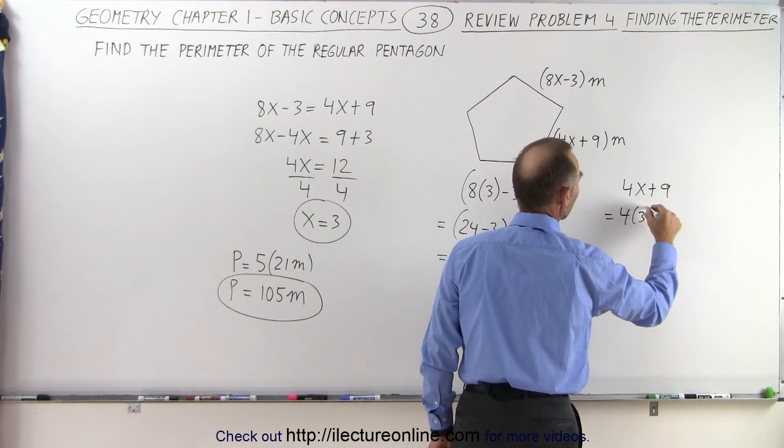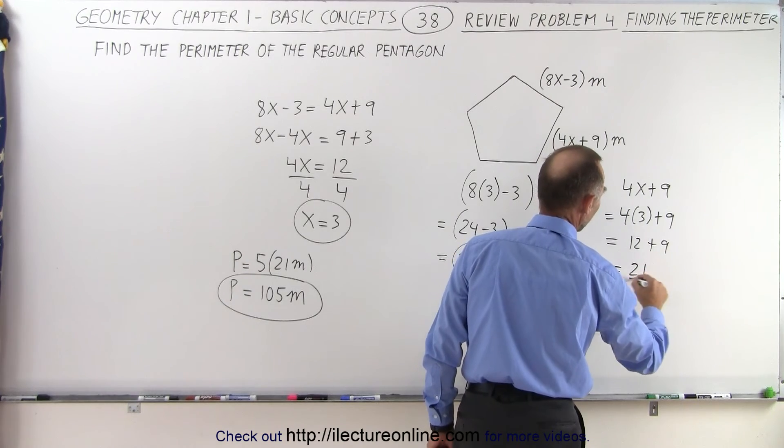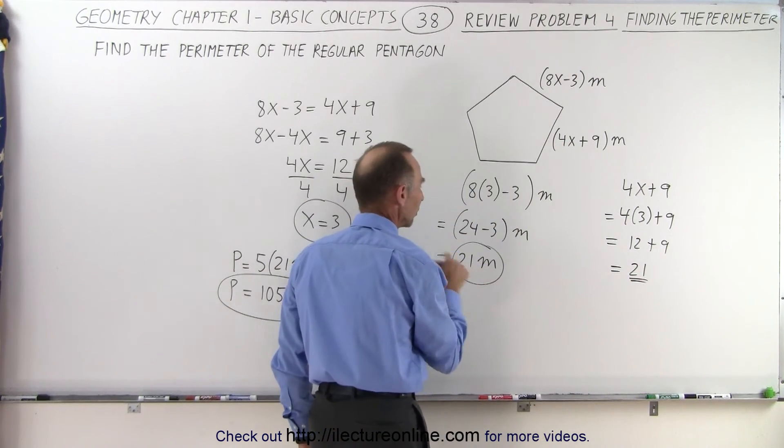That's 4 times 3 plus 9, which is 12 plus 9, which equals 21. We get the same value.